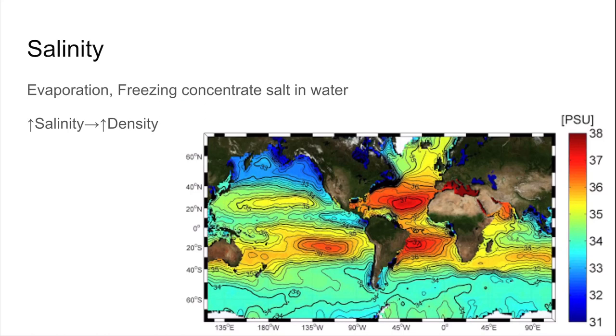The main processes that increase the salinity of water are evaporation and freezing. Evaporation takes out the liquid water and leaves behind the salts. We see this in the Mediterranean Sea, for example, where there is high evaporation and low rainfall over the sea. Salinity becomes very concentrated there.